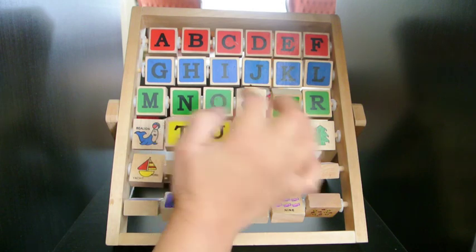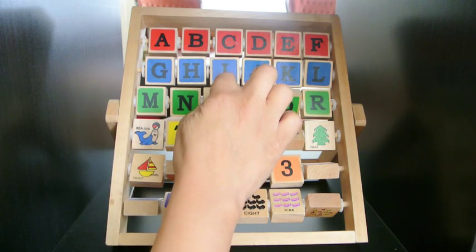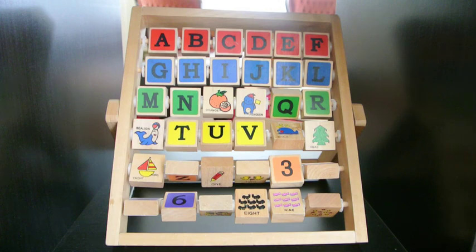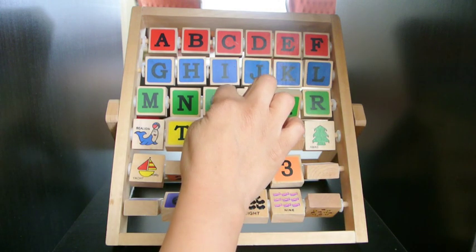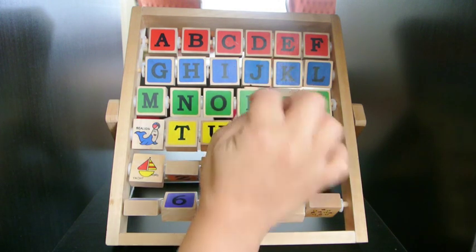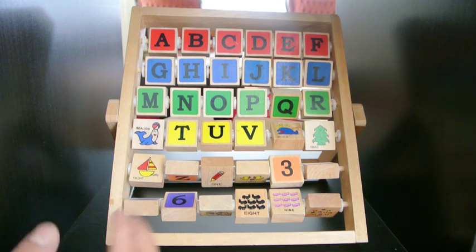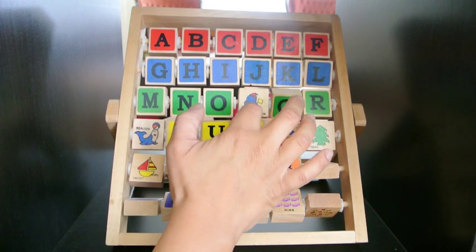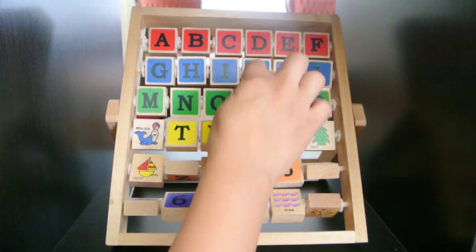And then we have the O. Orange. O-R-A-N-G-E. Orange. For P we have, there's a P. And then we have a penguin. Very nice.